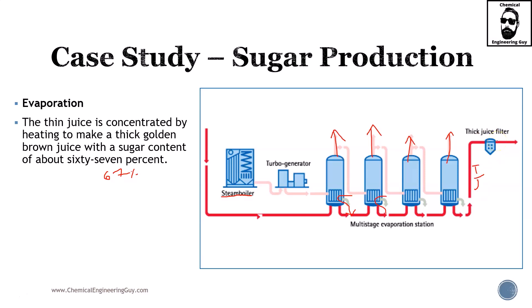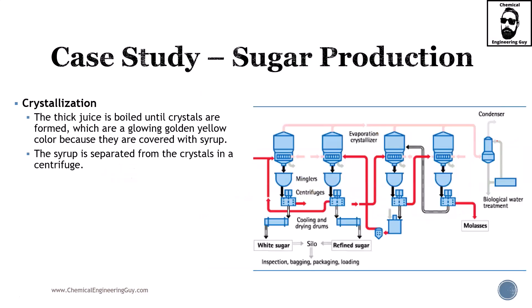At the end we have a thick juice. We then filter it to remove any solid material that is not part of our final sugar crystals. Eventually we need to crystallize the material — the thick juices are boiled until crystals form.